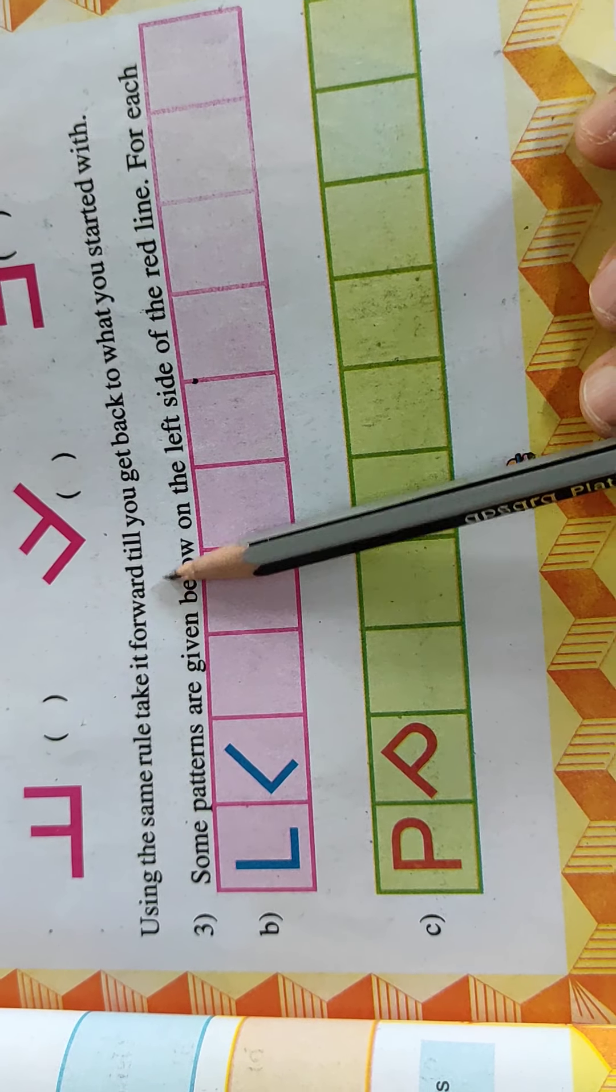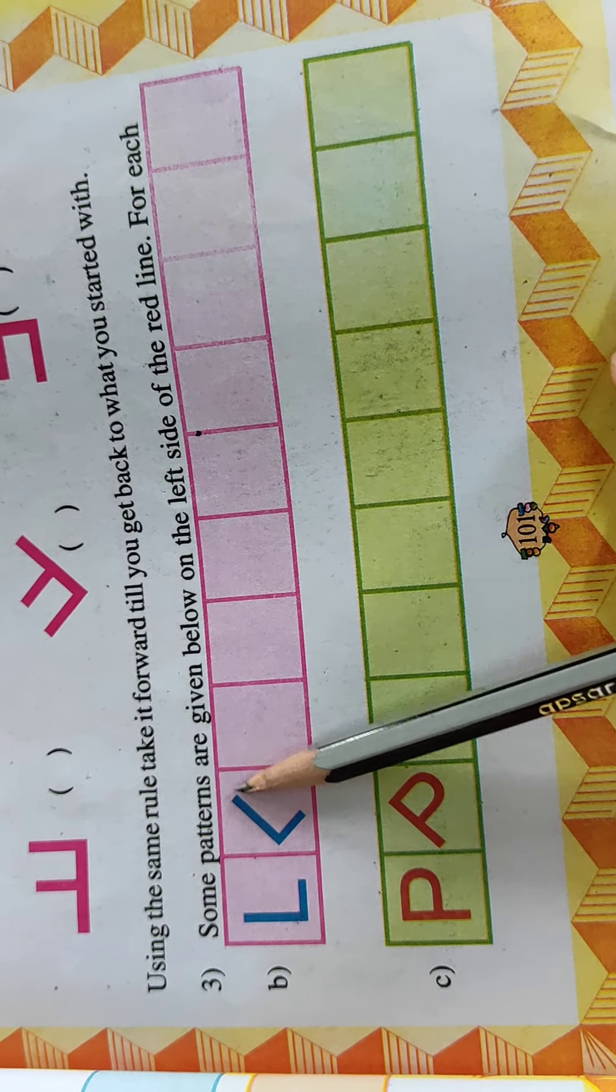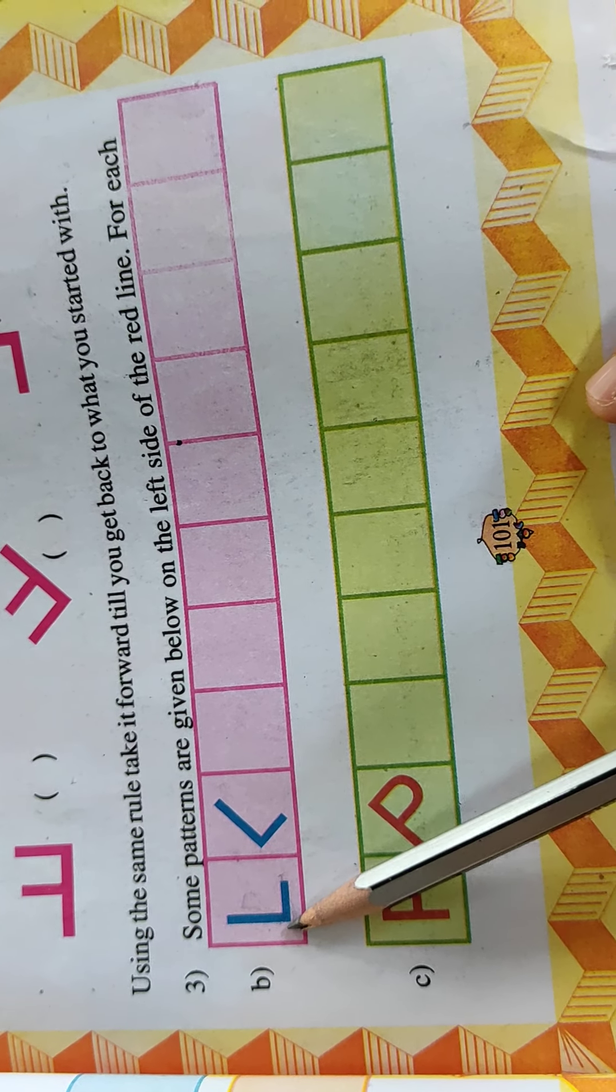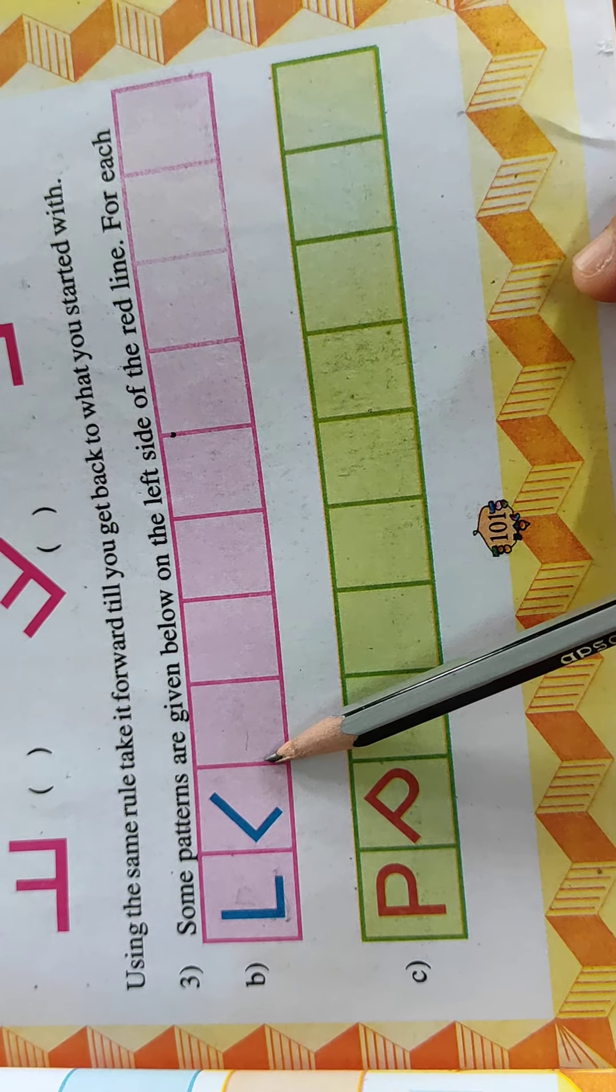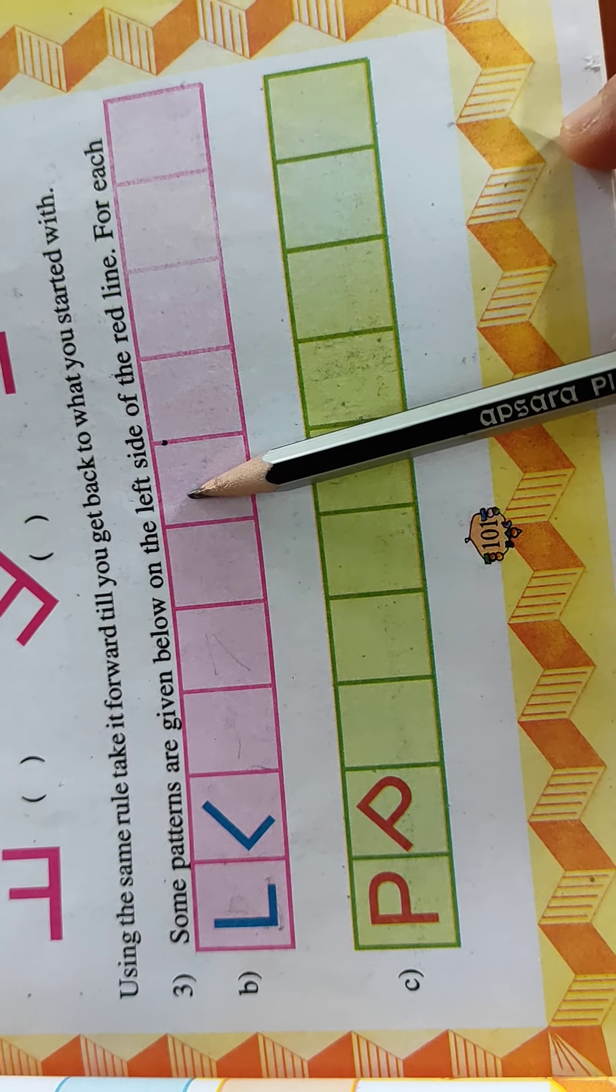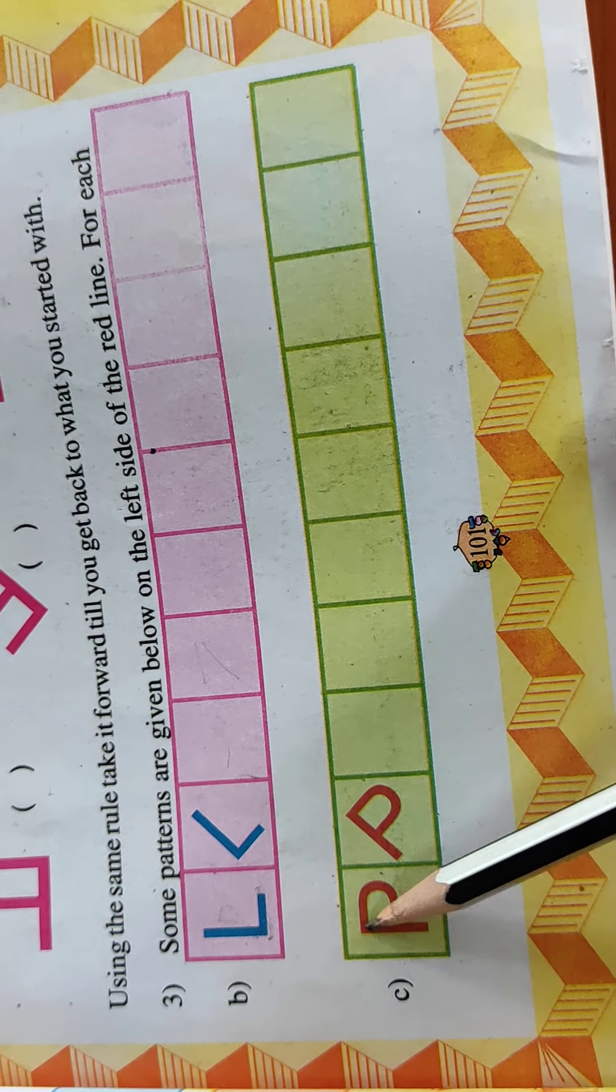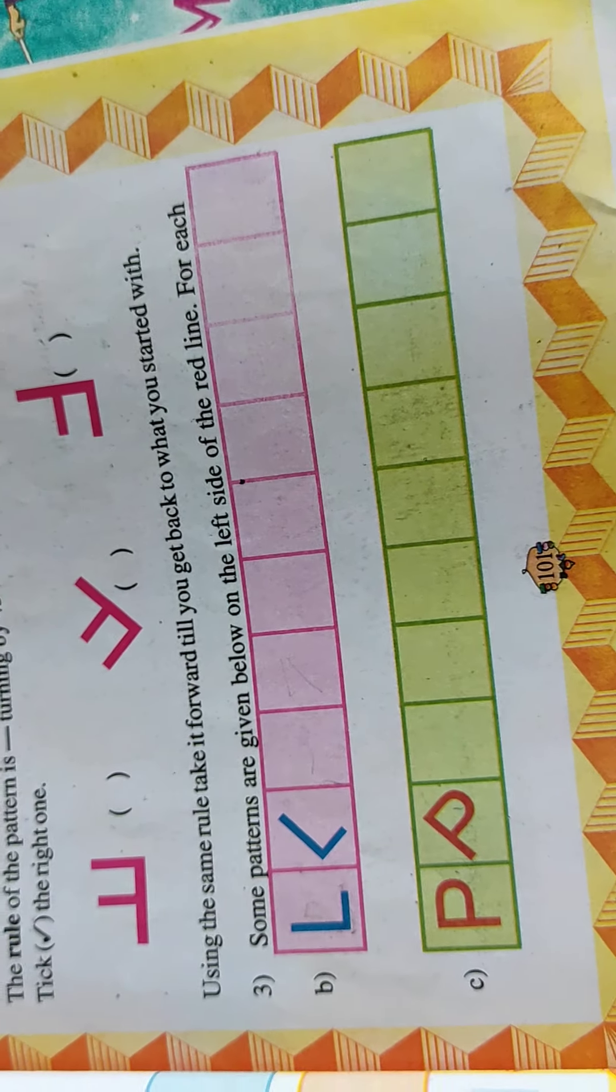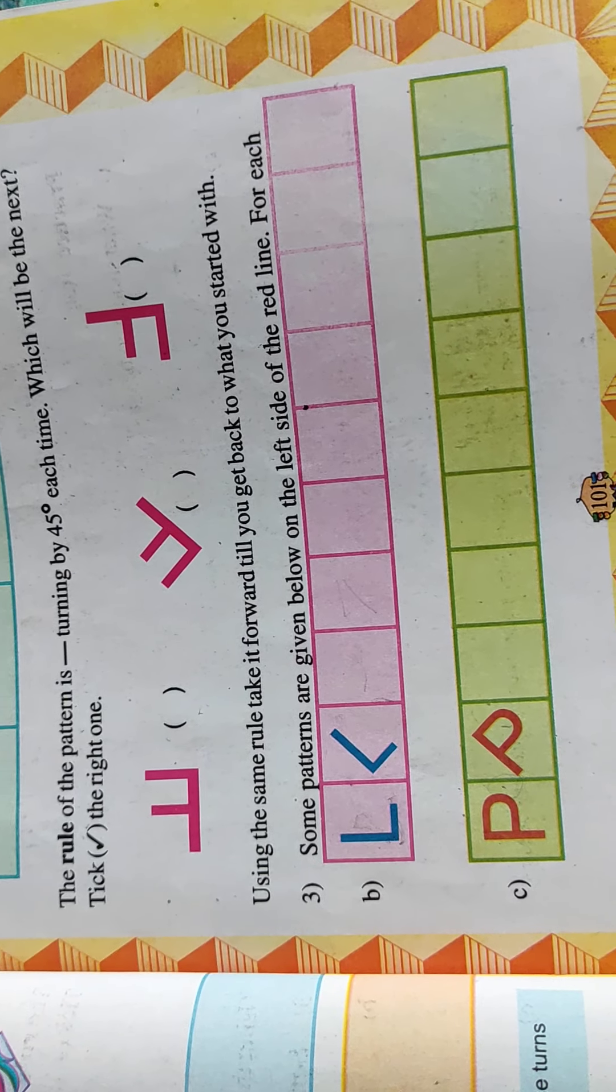Now next, using the same rule, take it forward till you get back to what you started. That means here, slide thirty degree. Now you, now see here, you will try. And don't worry, I am here. I will guide you.